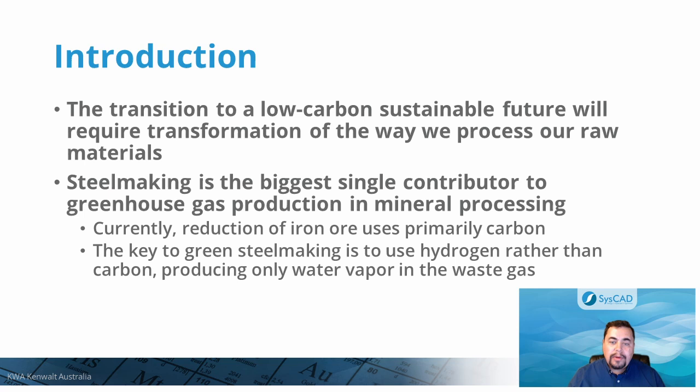The transition to a low-carbon sustainable future will require transformation in the way we process our raw materials. If we consider that steelmaking is the biggest single contributor to greenhouse gas production in the mineral processing industry, due to the use of carbon as the reductant, then the key to green steelmaking is to find alternative reductants. One alternative is the use of hydrogen rather than carbon to reduce iron ore, which produces only water vapor in the waste gas.